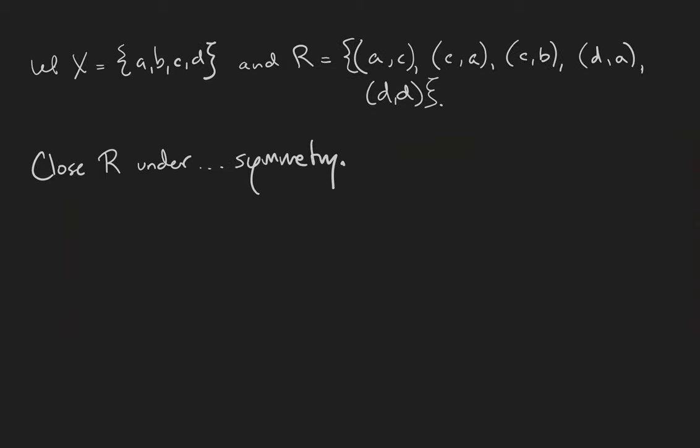Next, we're going to take the same relation and close it under symmetry. This time, we're going to need the inverses of every pair in the relation.